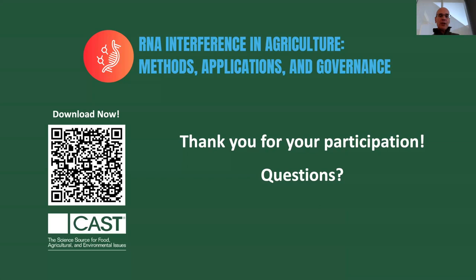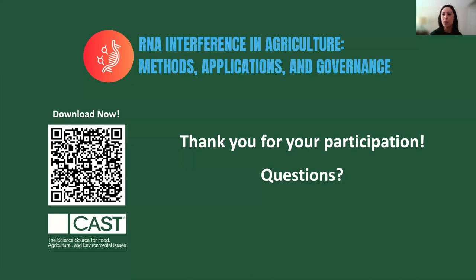Related to Calantha, did US EPA grant a tolerance exemption for this product or was an MRL established? Yes. For Calantha, EPA granted a tolerance exemption for the active ingredient. We were able to look at data indicating that the dsRNA in Calantha degrades at the same rate as RNA from plants and other naked RNA. There is a long history of safe dietary exposure to consuming RNA from plants, so we were able to rely on this history of safe use and grant a tolerance exemption.